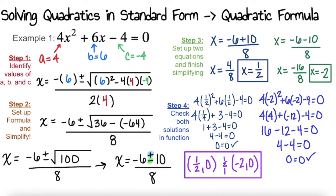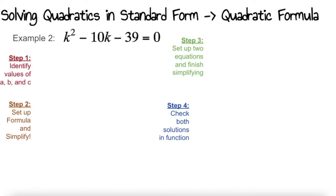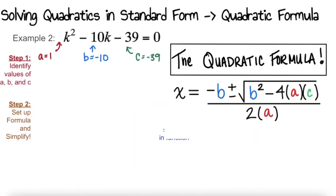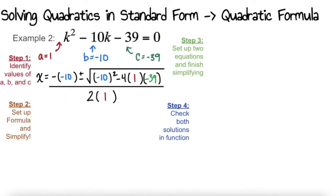Let's look at Example 2. We start the same way by identifying a, b, and c. For this example, a is 1, b is negative 10, and c is negative 39. Now bring in the quadratic formula and plug in those values — go ahead and try that on your own. You should have x equals negative negative 10, with two negatives happening here, plus or minus the square root of negative 10 squared minus 4 times 1 times negative 39, all over 2 times 1. If that's what you have, let's continue simplifying.